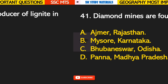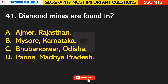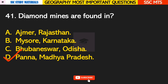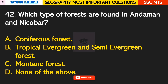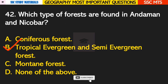Question number 41: diamond mines are found in? Answer D — they are found in Panna, which is in Madhya Pradesh. Question number 42: which type of forest is found in Andaman and Nicobar? Answer B — tropical evergreen and semi-evergreen forest.